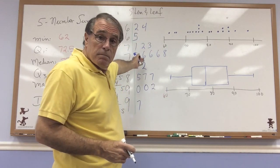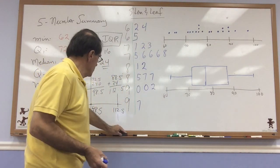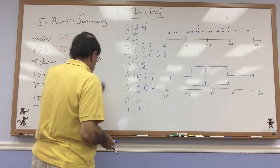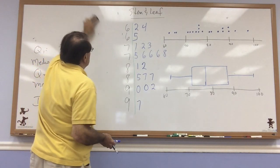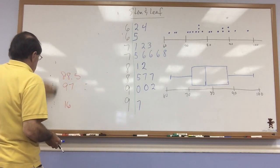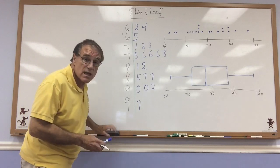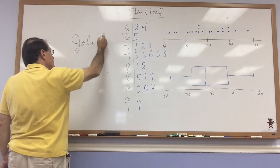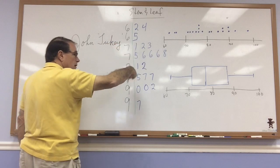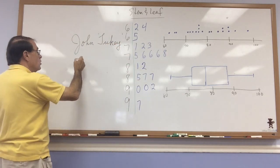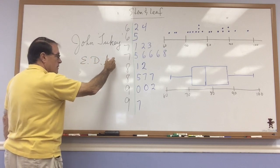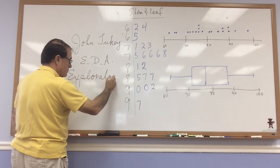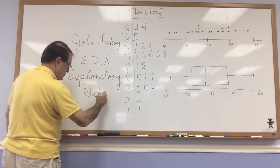Now, the stem and leaf and the box plot, these two structures were created by a statistician by the name of John Tukey. He invented this stem and leaf and box plot as ways to quickly summarize and analyze data. And he reported these developments in a book that he wrote called EDA, which stands for Exploratory Data Analysis.